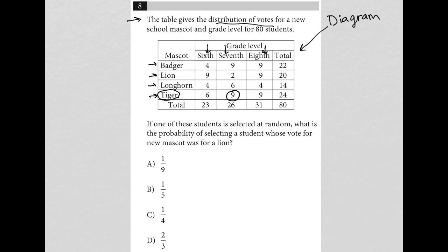I like to do that at times just to make sure I understand the table before moving forward so when I go back to it I can easily find my answer. The question goes on to say if one of these students is selected at random what is the probability of selecting a student whose vote for new mascot was for a lion.